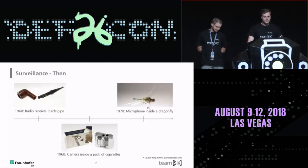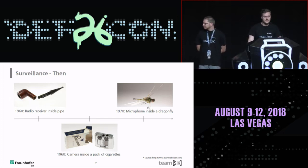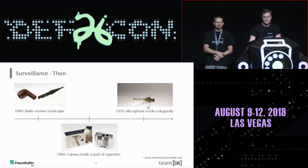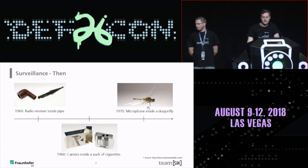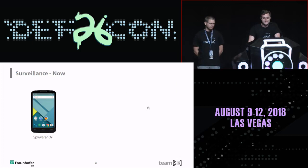Motivation: when putting the slides together, I asked how can I motivate tracker applications. You first think about surveillance. I found a cool blog post about a CIA museum. In the 60s already there were radio receivers inside a pipe — very small. Also in the 60s, a camera inside a pack of cigarettes to record the environment. And in the 70s, a microphone fit inside a dragonfly in order to spy on people. That was the past. How is it right now? I guess we all have it in our pocket — the smartphone.